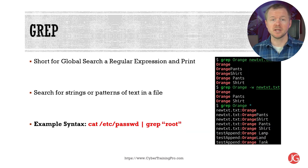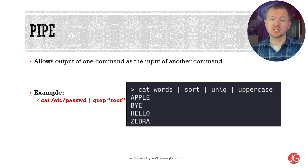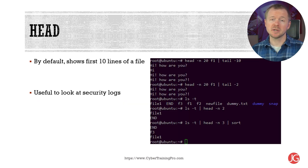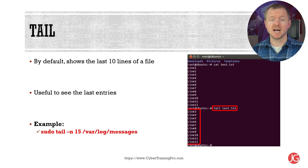Grep, short for globally search a regular expression and print, searches for a string or pattern of text within a file. For example, you can search for the username 'root' in the password file on Linux. The pipe command allows you to use the output of one command as input for another — you can use cat first and then grep to search the contents. The head command shows the first 10 lines of a file by default. The tail command shows the last 10 lines of a file, and you can specify more lines using the flag '-n' followed by the number of lines.